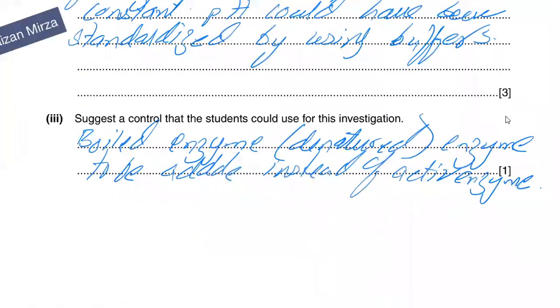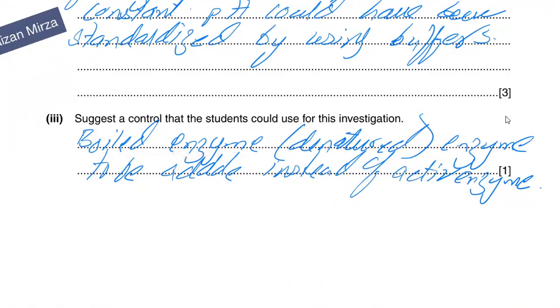Suggest a control the student could use for this investigation. So whenever using the enzyme investigation, the proper control always is using boiled enzyme because that's denatured enzyme to be added instead of the active enzyme. So this will just omit out the catalysis which is being carried out by the enzyme because the denatured enzyme cannot catalyze the same reaction anymore.